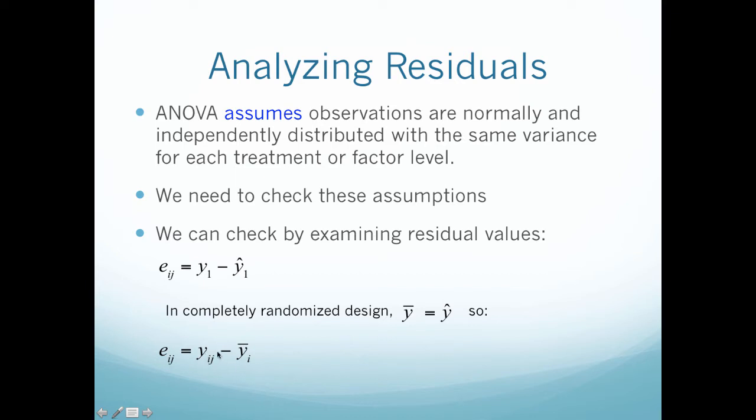Remember I and J just deal with treatment and observation level minus y-bar I, which is my average. So that is going to be the formula we are going to use in the ANOVA testing where we have multiple treatments.